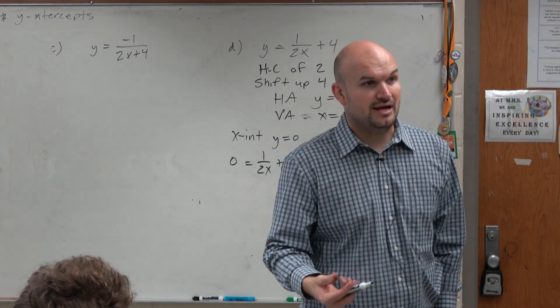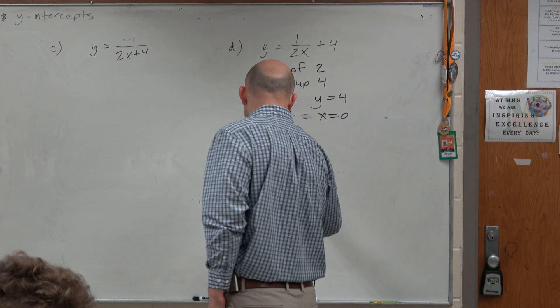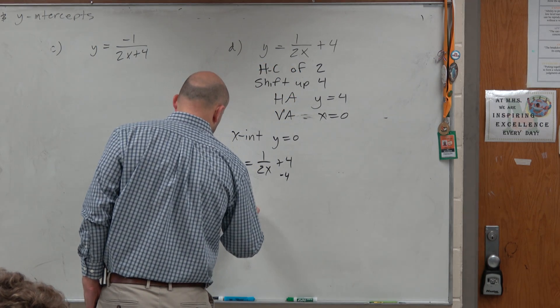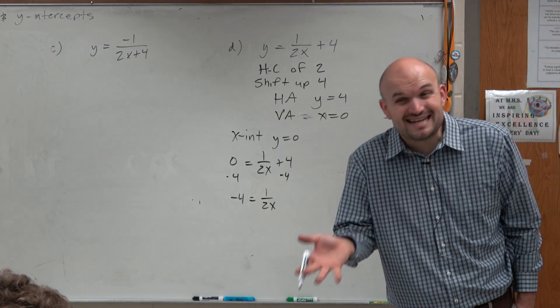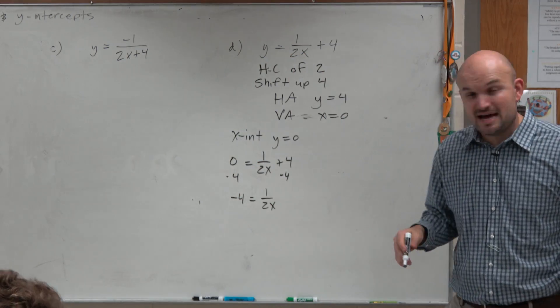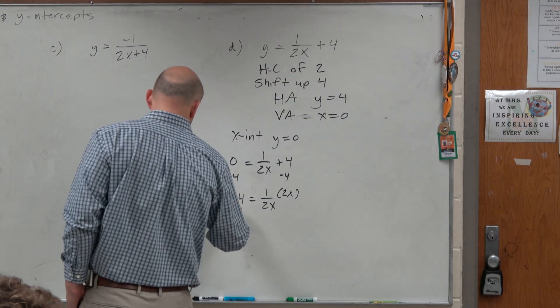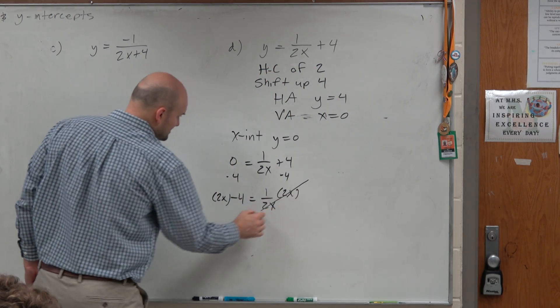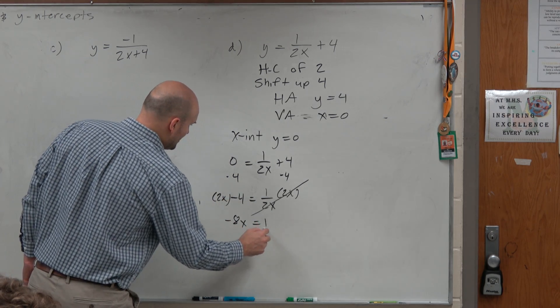Now, I need to solve for x. To solve for x, you've got to isolate the fraction first. So I'm going to subtract the 4 on both sides. Now, I've got to solve for x, but x is in the denominator. So to get x off the denominator, I need to multiply by the denominator on both sides. That divides to 1, and this gives me negative 8x is equal to 1.